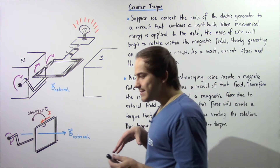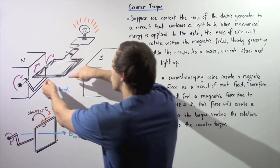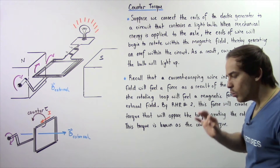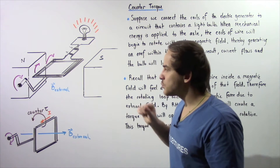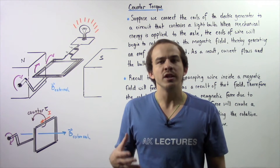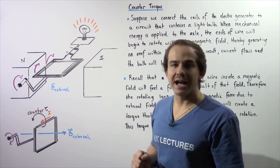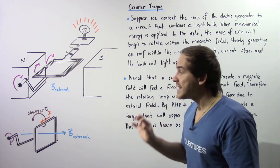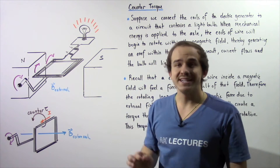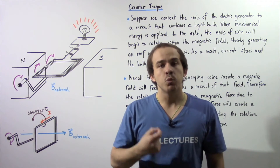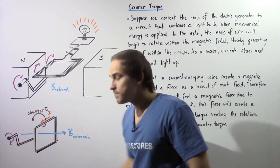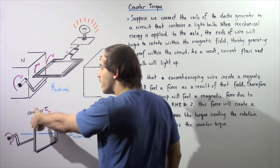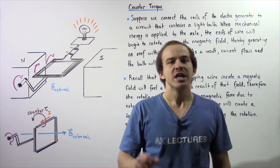What exactly is the limitation of this process? When our coils begin to rotate, those coils will begin to carry electric current. Recall that whenever a wire carrying electric current is placed within a magnetic field, that magnetic field will exert a magnetic force on the current inside that wire. Applying right-hand rule number two, the magnetic force acting on our wire will create a torque pointing in the opposite direction of our initial torque. This opposing torque is known as the counter torque.